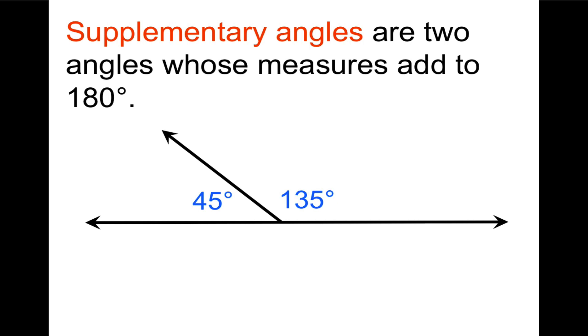Just a simple way to keep track of this. I think of complementary. C is a smaller letter than S or it comes sooner in the alphabet. And 90 is less than 180. So that helps me remember which is which with complementary and supplementary.